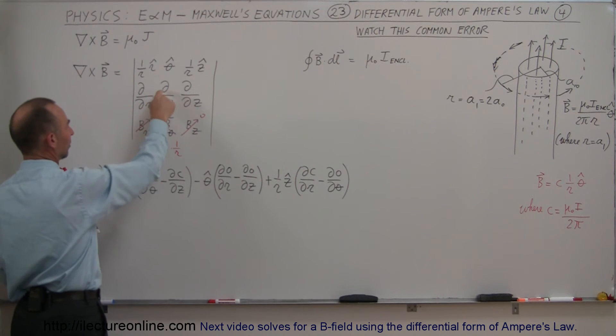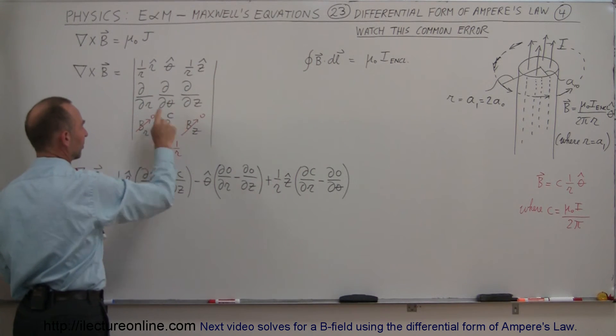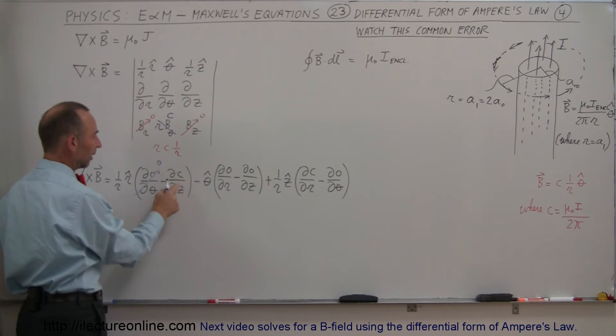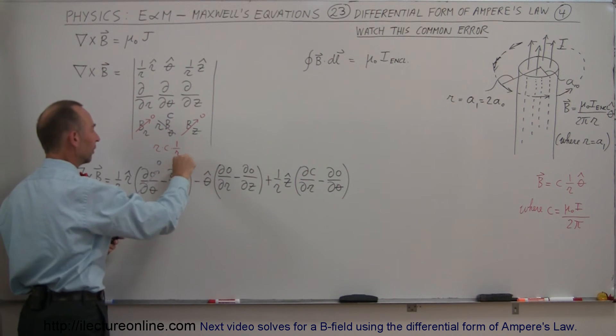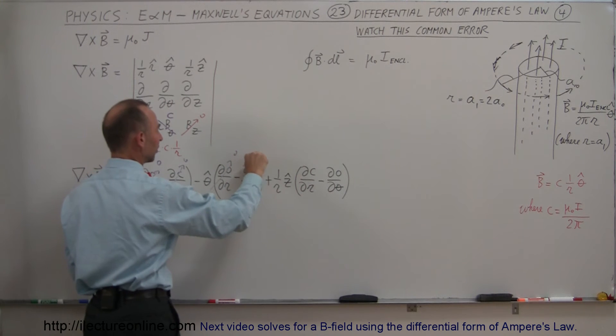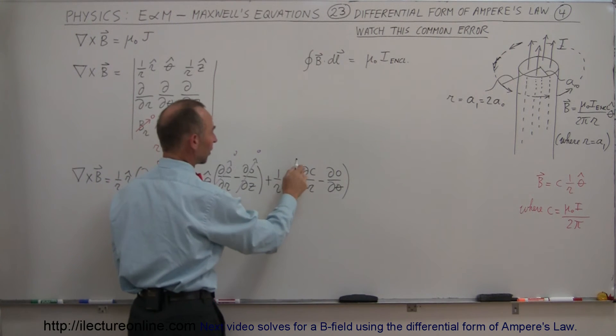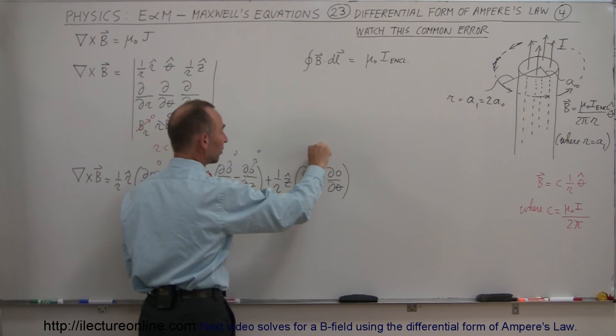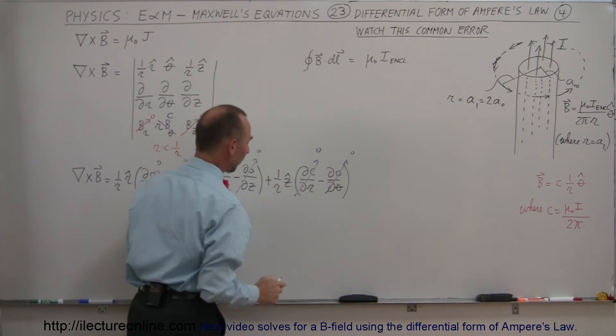Now notice that the partial derivative of 0, well that's 0, and the partial derivative of a constant, that is also 0. And then here we have a partial derivative of 0, which is 0, partial derivative 0, which is 0. And here we have the partial derivative of a constant with respect to r, and that will then also be 0. And this is 0.